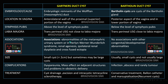A useful mnemonic: Bartholin — close to butt and also below. Gartner duct cysts are classically associated with abnormalities of the metanephric urinary system, including Herlyn-Werner-Wunderlich syndrome, renal agenesis, ipsilateral renal dysplasia, and crossed fused ectopia. No such associations are commonly seen with Bartholin duct cysts. Gartner duct cysts are small, less than 2 cm, though sometimes very large, while Bartholin duct cysts are usually small.